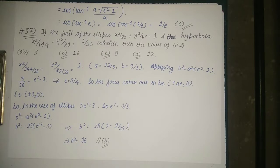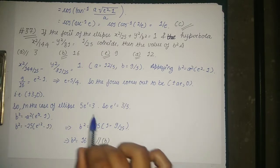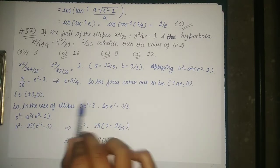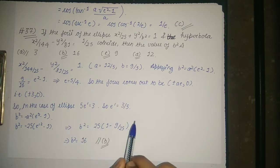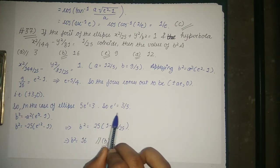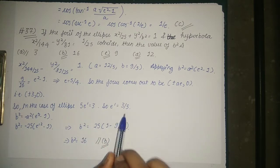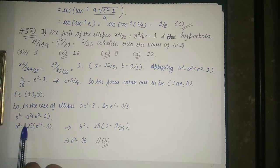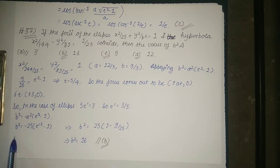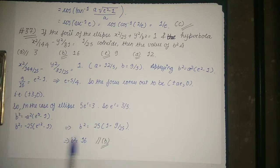For the ellipse, the coinciding foci give us 5·e' = 3, so the eccentricity of the ellipse comes out to be 3/5. Applying B² = A²(1 - e'²), we get B² = 25·(1 - 9/25). So the value of B² finally comes out to be equal to 16.